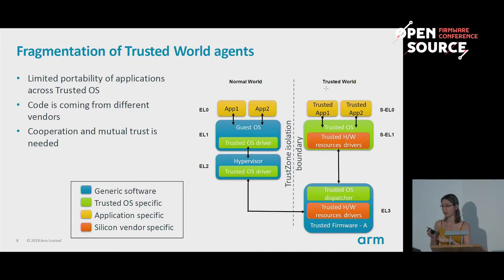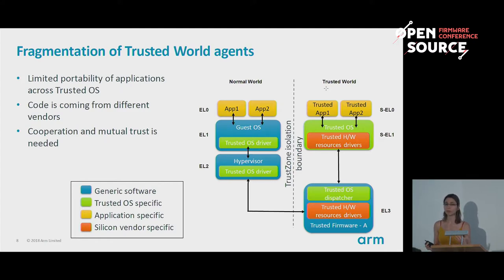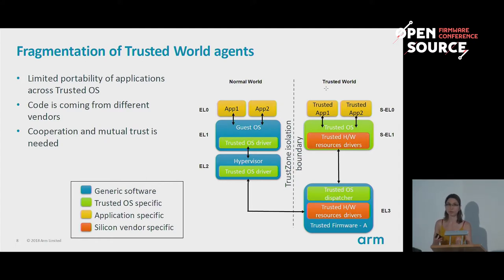The same goes in the EL3 firmware — you need a dispatcher to intercept all requests for the trusted OS and forward them in a trusted OS-specific manner to Secure EL1. Code is coming from different vendors: the trusted OS vendor, plus potentially the silicon vendor if you need access to particular trusted hardware resources. Since there's no proper isolation and code is from different vendors, these people have to trust each other — these software images must cooperate to some degree, and that's an issue.